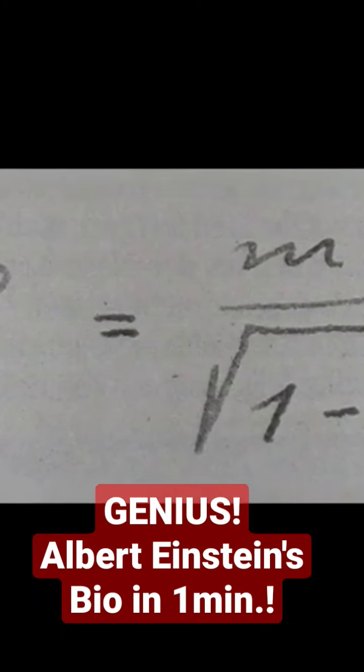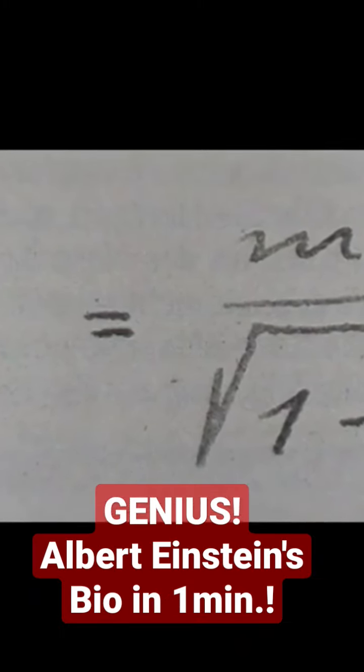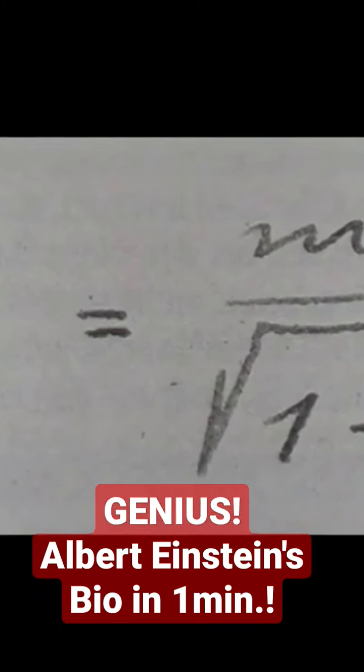The equation E equals mc squared is easily the most famous formula in history. It has had an immense impact on physics, technology, and not least, politics.